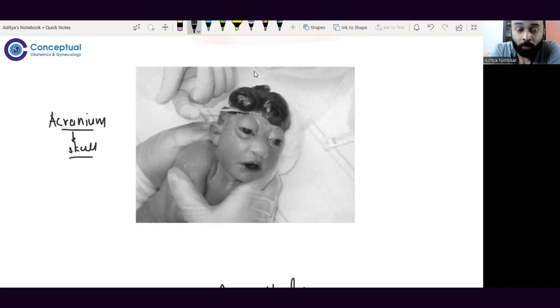Anencephaly often begins as acrania. When it initiates in the first trimester, the surrounding environment absorbs all the brain material, and it eventually forms anencephaly. It starts as acrania, then becomes anencephaly when after eventual absorption only the meninges are left and the brain parenchyma is completely absorbed.